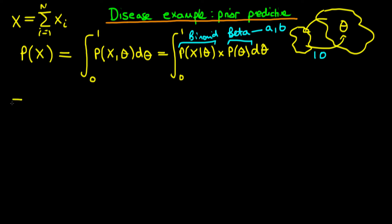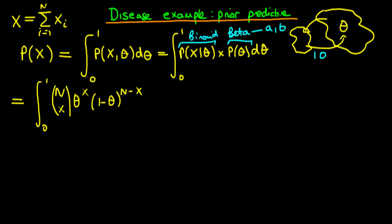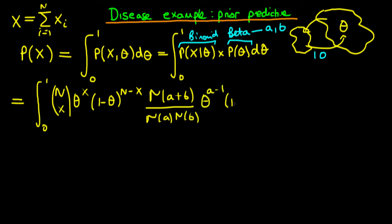We start by rewriting our integral with the binomial distribution explicitly: the binomial distribution is written as C(n,x) times theta to the power x times (1 minus theta) to the power (n minus x). We rewrite our beta distribution as gamma(a+b) divided by gamma(a) times gamma(b), times theta to the power (a minus 1) times (1 minus theta) to the power (b minus 1), d theta.